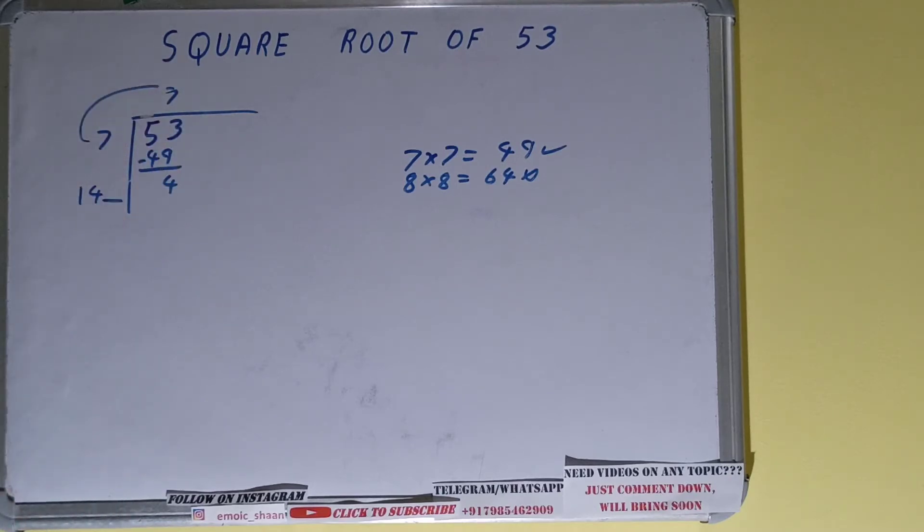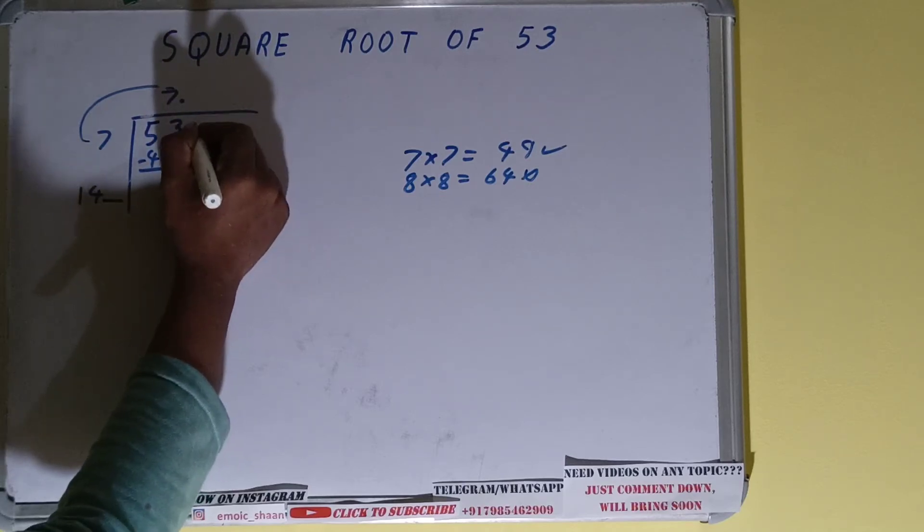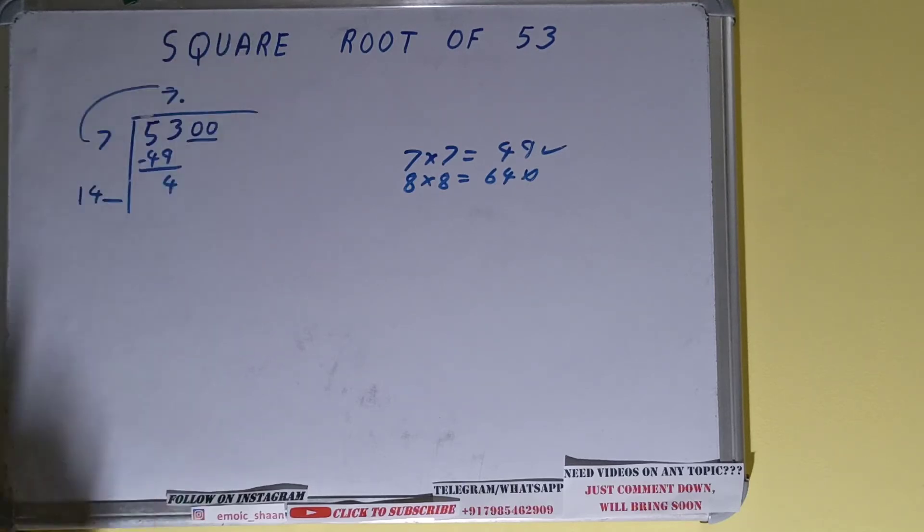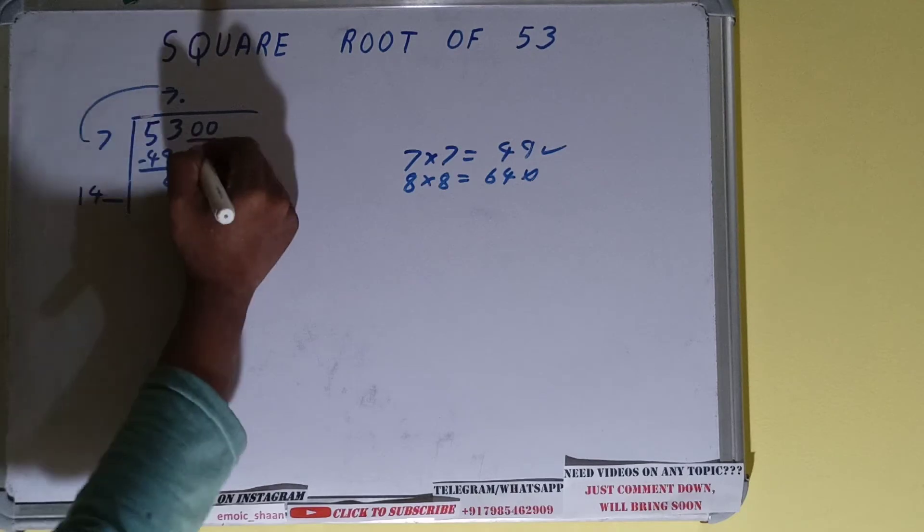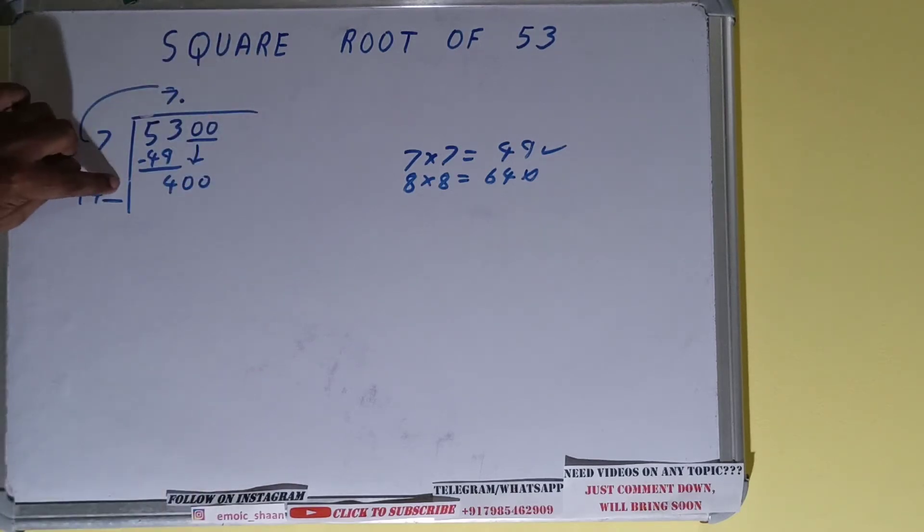Now you can see this number 4 is smaller than this three-digit number. So to make it big, we'll use decimal over here, and once we put decimal, we can take pair of zeros. Okay, bring it down. We'll have 400.